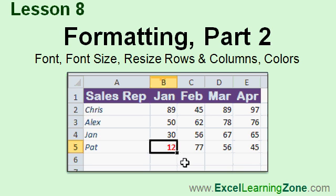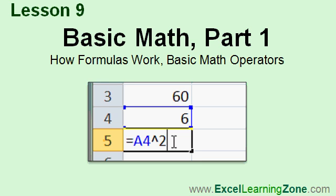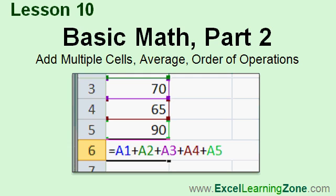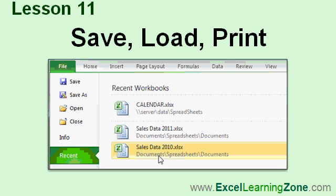In Lesson 8, we're going to continue learning about formatting our sheets. We'll learn how to change the font and the font size, how to resize rows and columns, and how to change the foreground and background colors. In Lesson 9, we'll learn how to perform calculations in Excel, how formulas work, and the basic math operators. In Lesson 10, we're continuing on with basic math in Excel. We'll learn how to add multiple cells together, take an average of a group of cells, and learn about the order of operations in mathematics. In Lesson 11, we'll learn how to save our workbook to our computer hard disk, load it back up again, and print our spreadsheet to the printer.